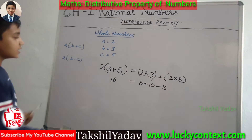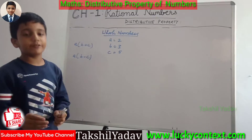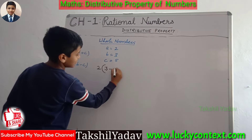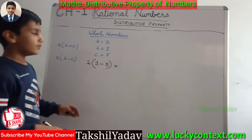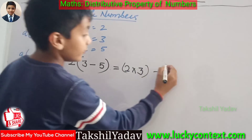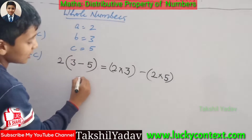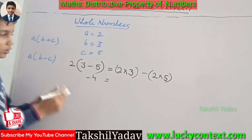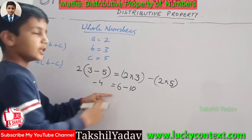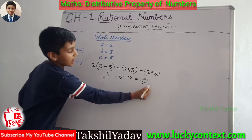Now comes the second formula — distributivity of whole numbers in multiplication over subtraction. We have A into B minus C equals A into B minus A into C. Putting the same values, we get 2 into 3 minus 5 on the LHS, and on the RHS: 2 into 3 minus 2 into 5. On LHS, 3 minus 5 is minus 2, and minus 2 into 2 is minus 4. On the RHS, 2 into 3 is 6, and 6 minus 2 into 5 is 10. 6 minus 10 gives us minus 4. Both solutions are equal.